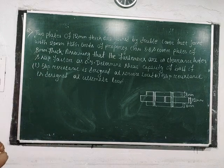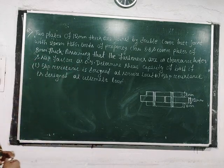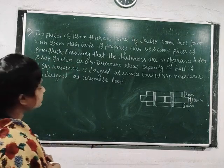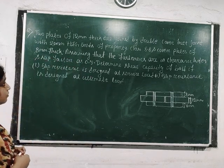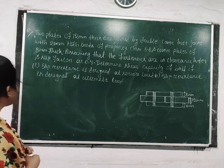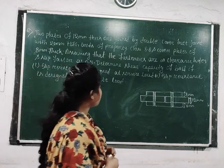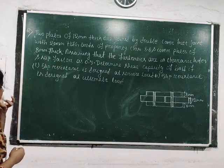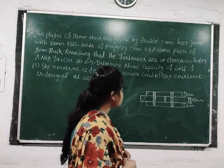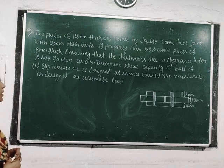The question is: 2 plates of 12 mm thick are joined by a double cover butt joint with 20 mm HSFG bolts of property class 8.8 and cover plates of 8 mm thick. Assuming that the fasteners are in clearance holes and slip factor as 0.3, determine the shear capacity of bolt if (1) slip resistance is designed at service load, and (2) slip resistance is designed at ultimate load.